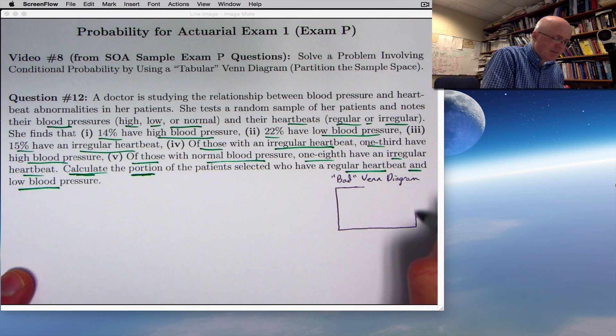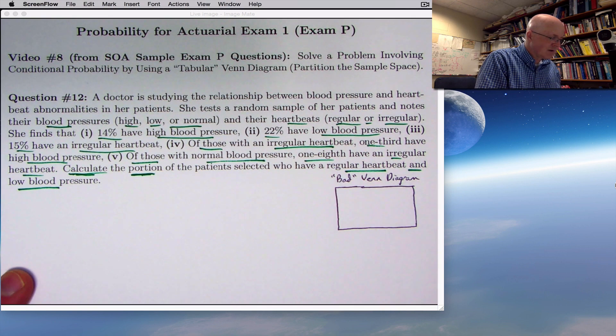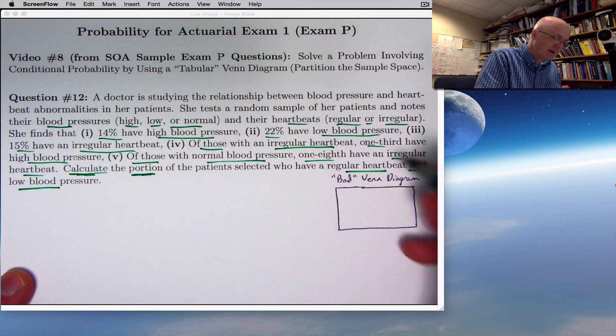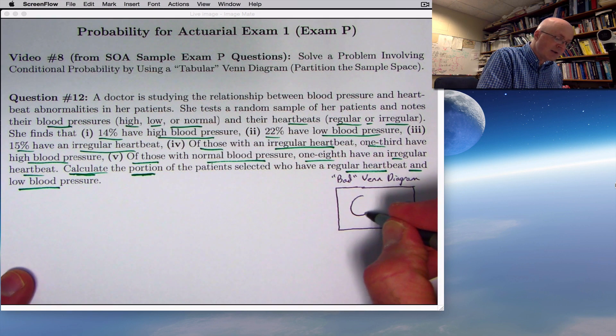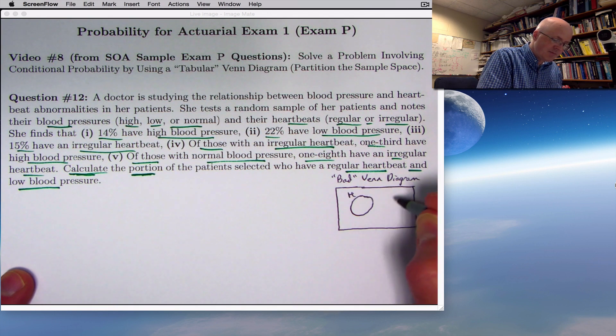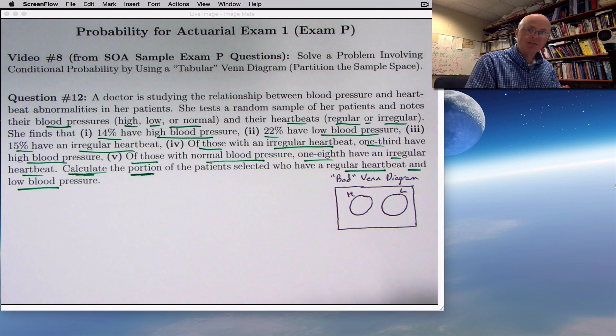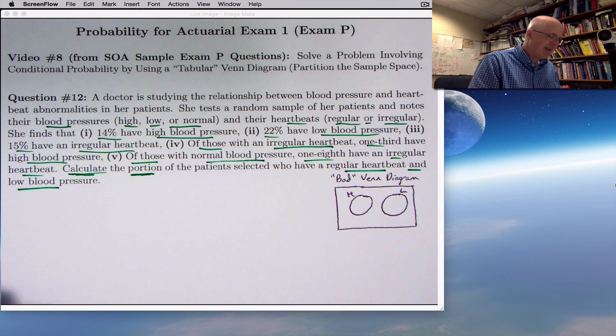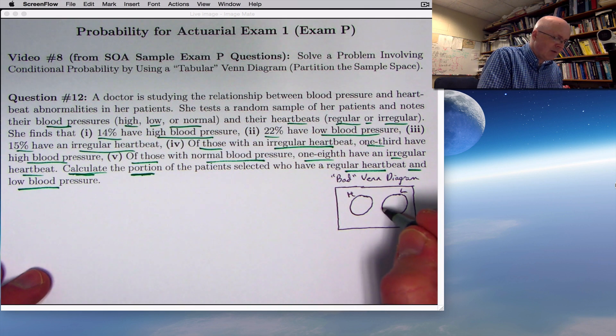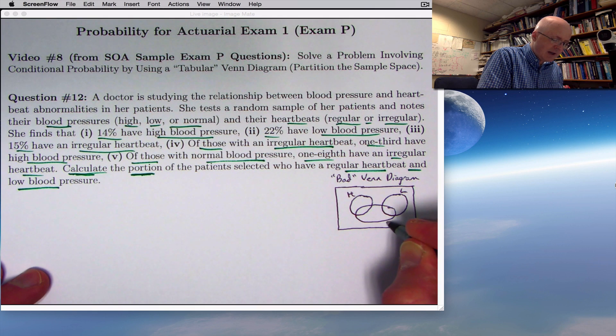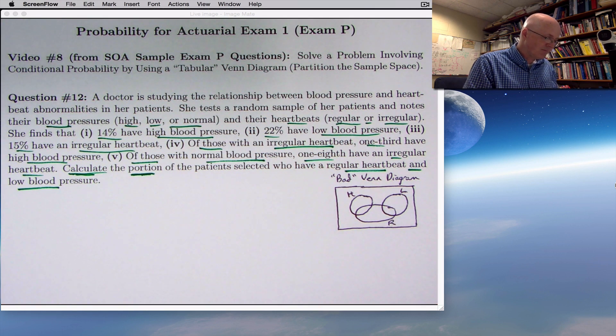So I drew a box, and I drew, first of all, two circles, noting that if a patient has high blood pressure, they can't have low blood pressure and vice versa. So I made these two circles non-overlapping, disjoint from each other. One, that's also called mutually exclusive. One labeled H for high blood pressure, one labeled L for low blood pressure. And if you're outside of both circles, then you have normal blood pressure. And then I made a circle for the regular versus irregular heartbeats, and that I do want to allow overlap. So I made it about like this, kind of like an oval or an ellipse, and you could label that R for regular heartbeats.